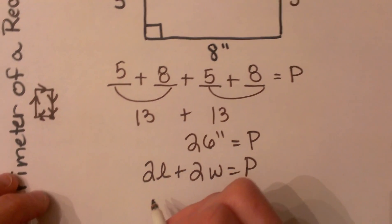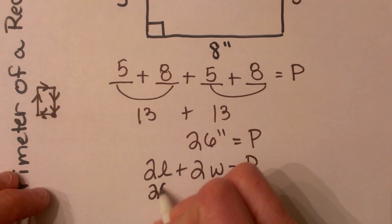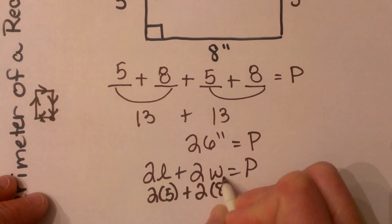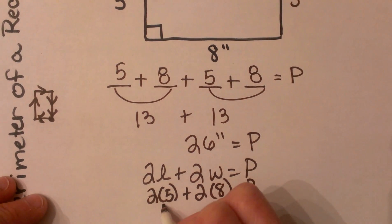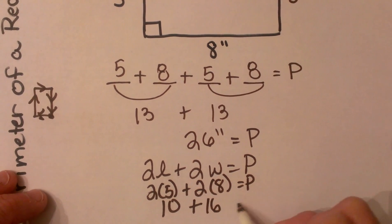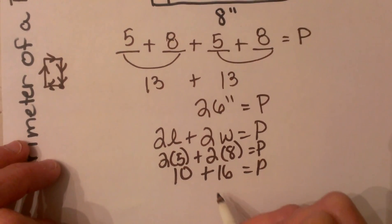So if I use this formula, I'm going to take 2 times 5 plus 2 times 8 to find the perimeter. That's 10 plus 16, which is 26.